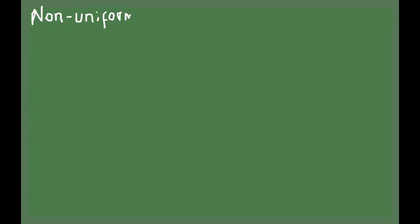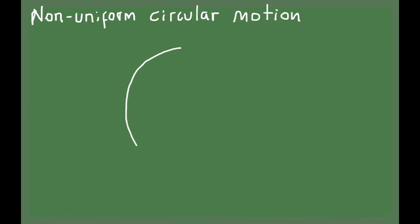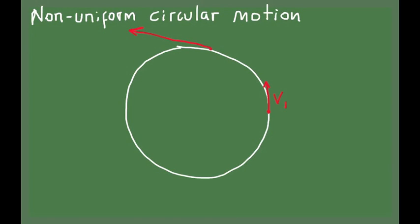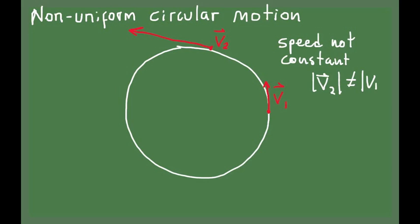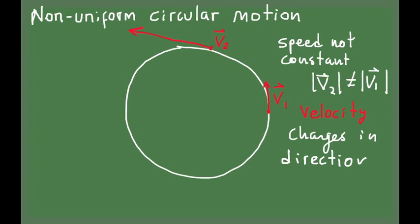After discussing uniform circular motion, it's time to look at the case when the motion of an object moving in circular motion is not uniform. That means that if you look at the velocity vectors at two different points along the circle, those velocity vectors might have a different magnitude. So the speed is not constant in non-uniform circular motion. In this kind of motion, the velocity changes in direction, just as it did in uniform circular motion, but the velocity also changes in magnitude.